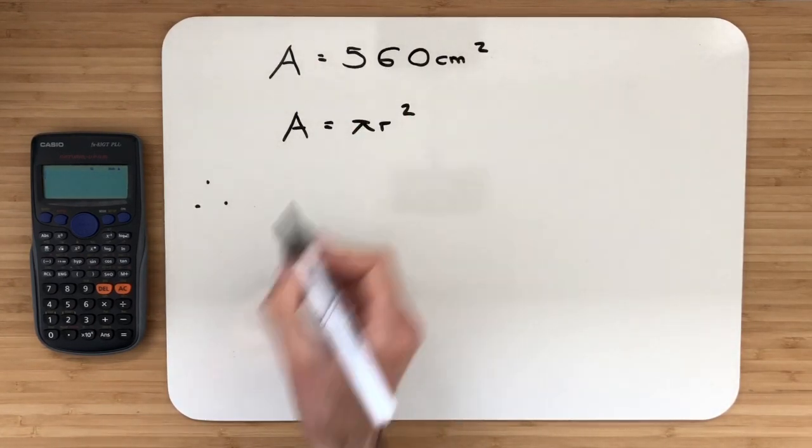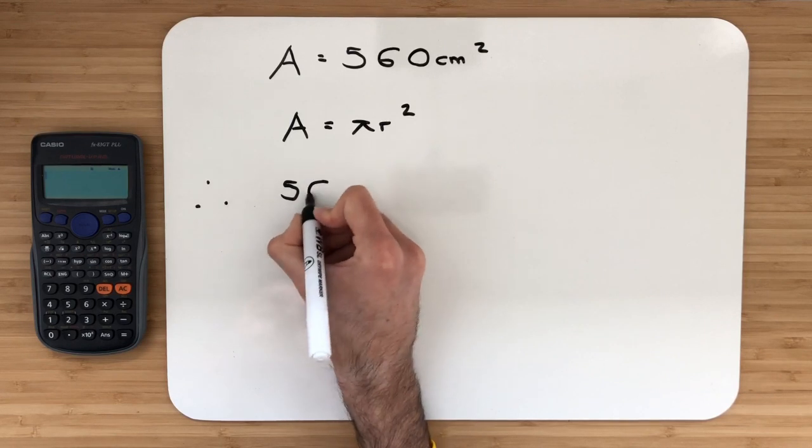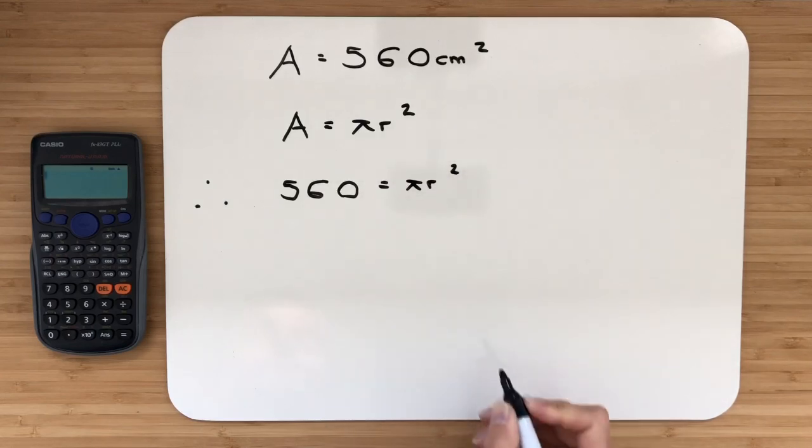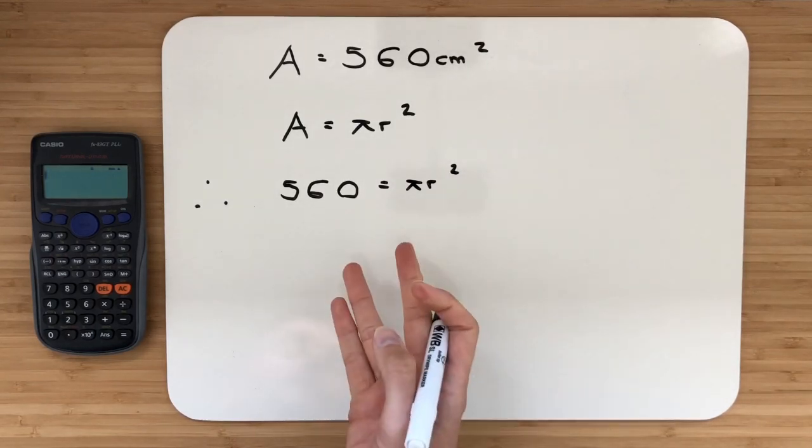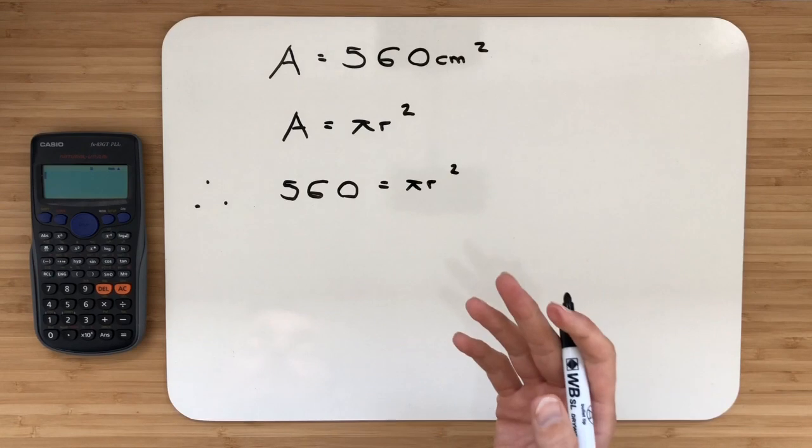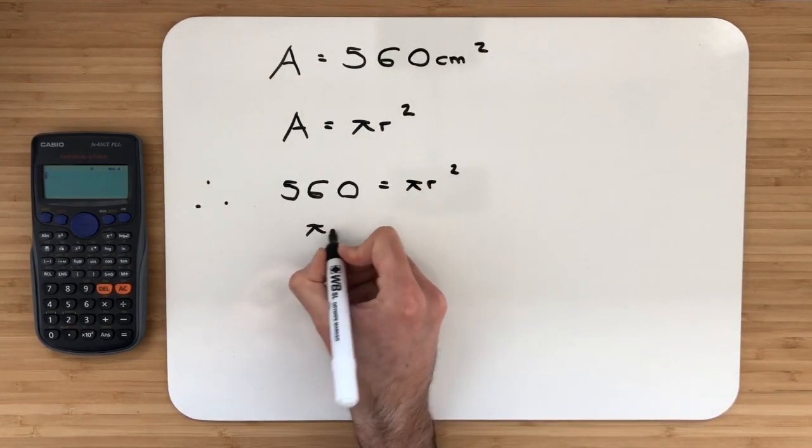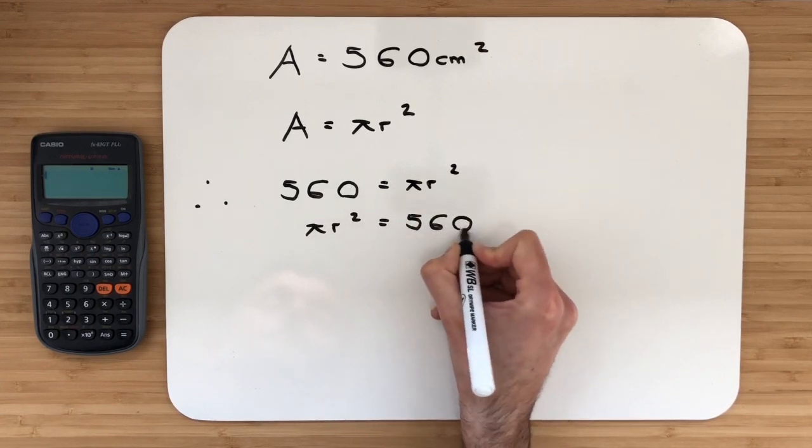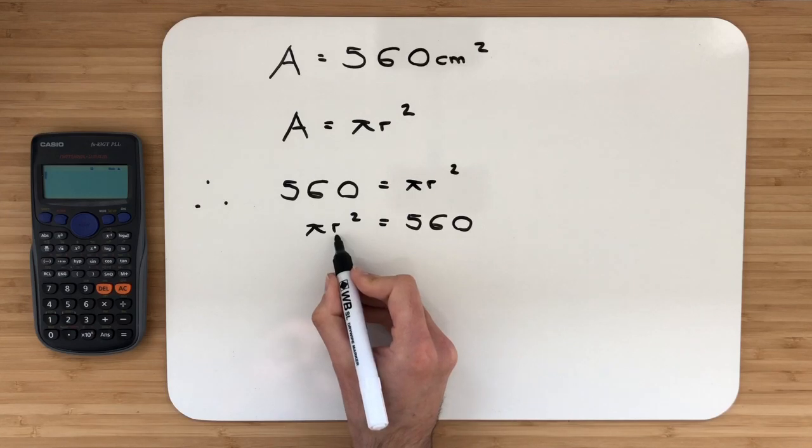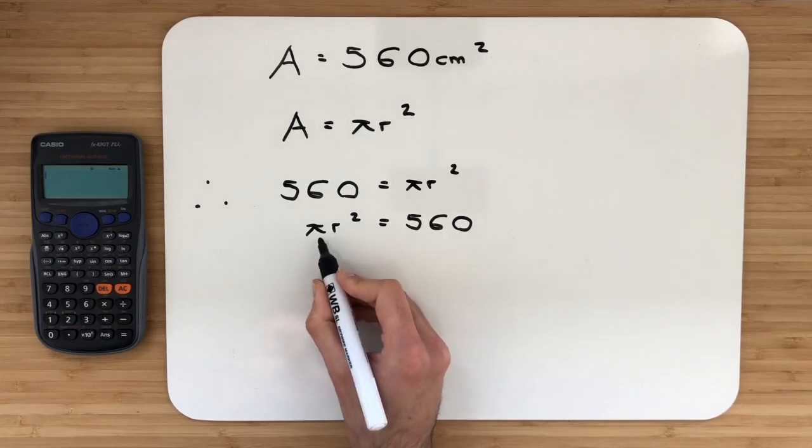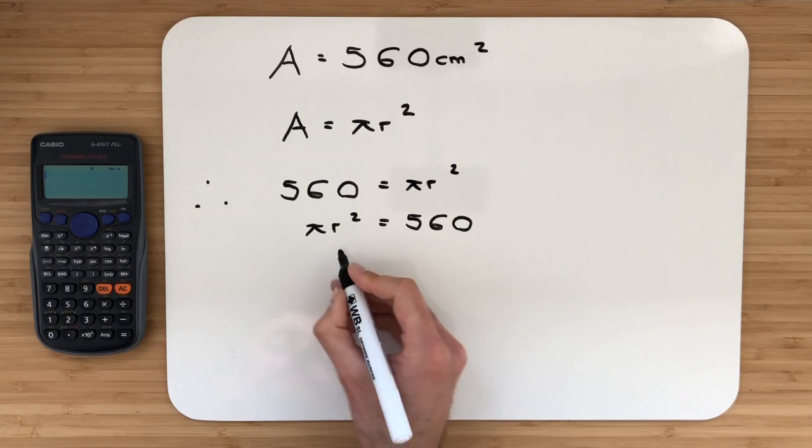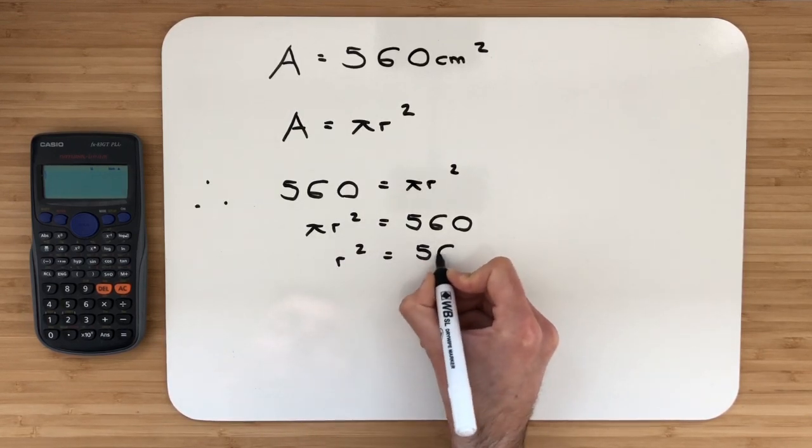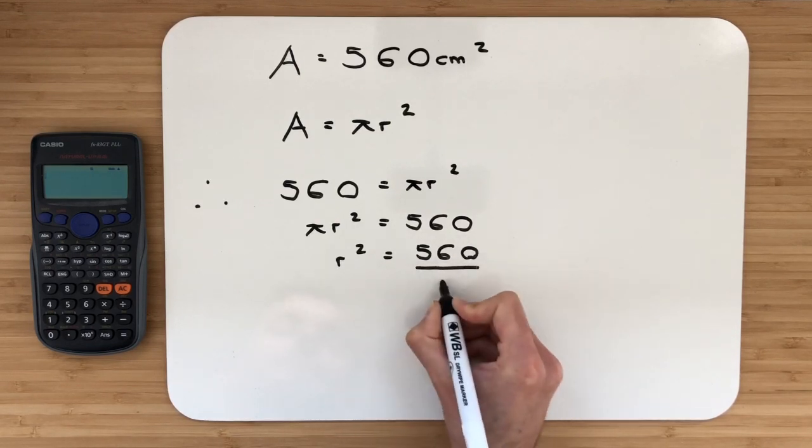Therefore, the area is 560. So we're going to write 560 is equal to π r squared. We can flip this round: π r squared is equal to 560. Now I'm looking to calculate the radius. It's currently being squared and multiplied by π. So we'll have r squared equals 560 divided by π.